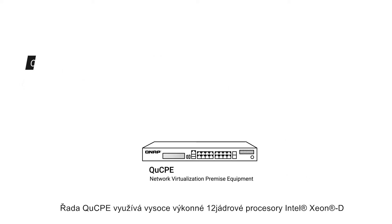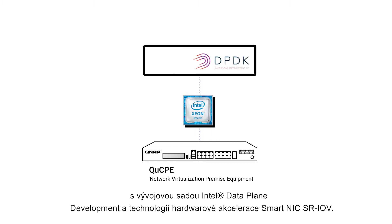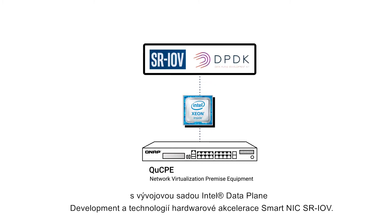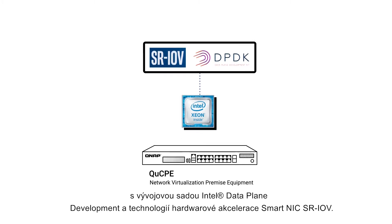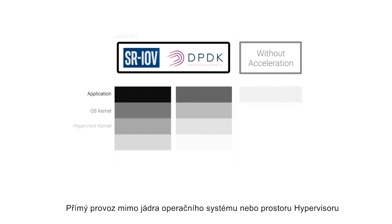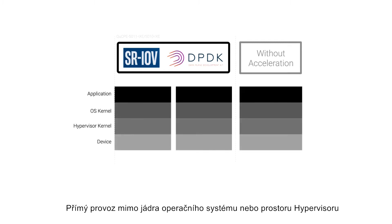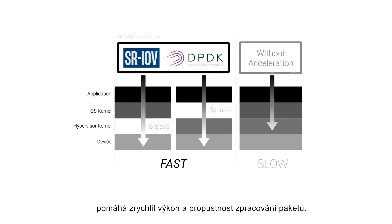The QCPE series adopts high-performance Intel Xeon D 12-core processors with Intel Data Plane Development Kit and SmartNIC SRIOV hardware acceleration technology. Through bypassing the operating system kernel or hypervisor kernel space, this helps speed up packet processing performance and throughput.